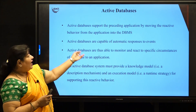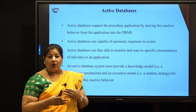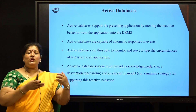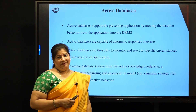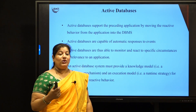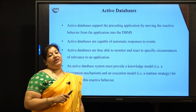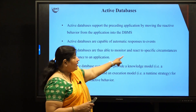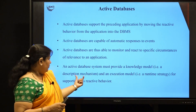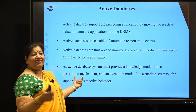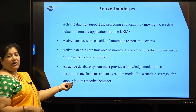The solution for this is active databases, because in an active database the previous problem can be moved from the application level to the DBMS itself. The reactive behaviour should be moved from the application to the DBMS. Active databases are capable of automatic responses to events. The function that checks for a particular condition has to be associated with the DBMS so that it can automatically respond to that situation. They will be able to monitor and react to specific circumstances relevant to an application — they have a knowledge model which describes that mechanism, and an execution model which is the runtime strategy for supporting this behaviour.